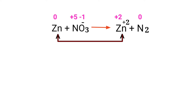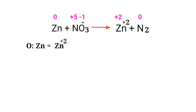First, figure out the reducing and oxidizing agents by assigning oxidation numbers. In this equation, zinc has a charge of 0 and is changing to plus 2, so zinc is being oxidized. Nitrogen has a charge of plus 5 and is changing to 0, so nitrogen is being reduced.